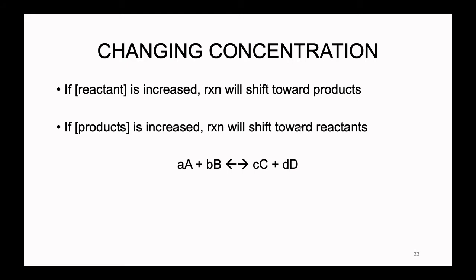Let's look at changing concentration first. If your reactant concentration is increased, your reaction will shift towards products. If your product concentration is increased, your reaction will shift towards reactants. The opposite is also true: if reactant concentration is decreased, the reaction shifts towards reactants; if product concentration is decreased, the reaction shifts towards products. Here's an easier way to think about it using our general reaction where A plus B reversibly creates C plus D. At equilibrium, we have equal energy on both sides.